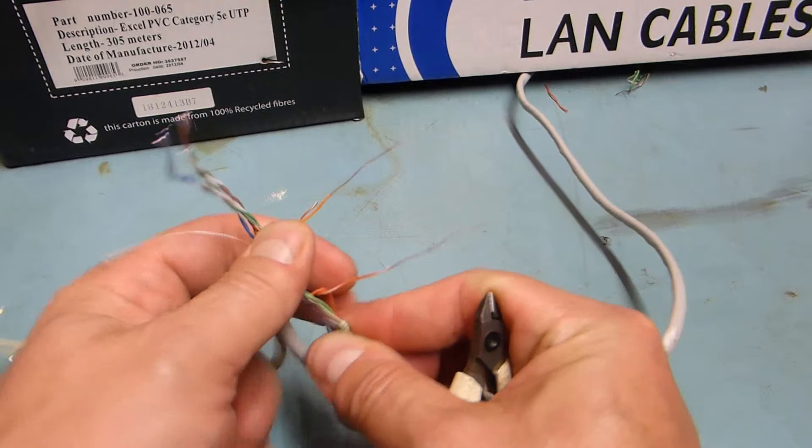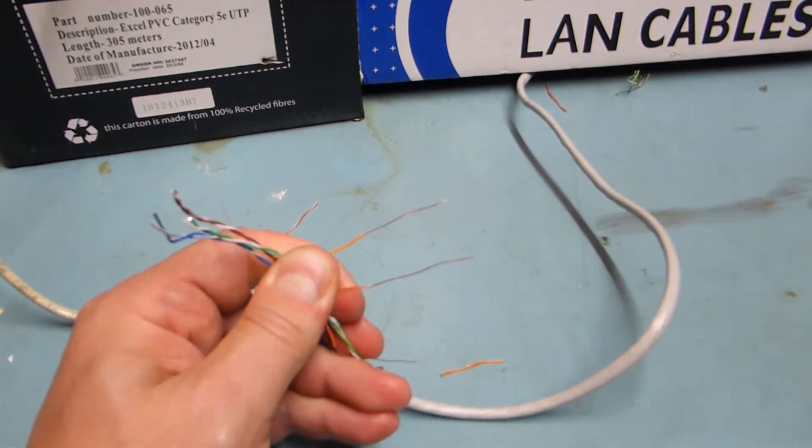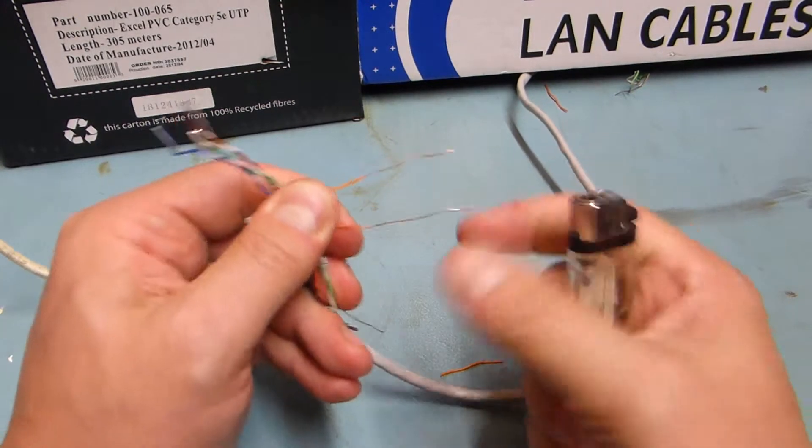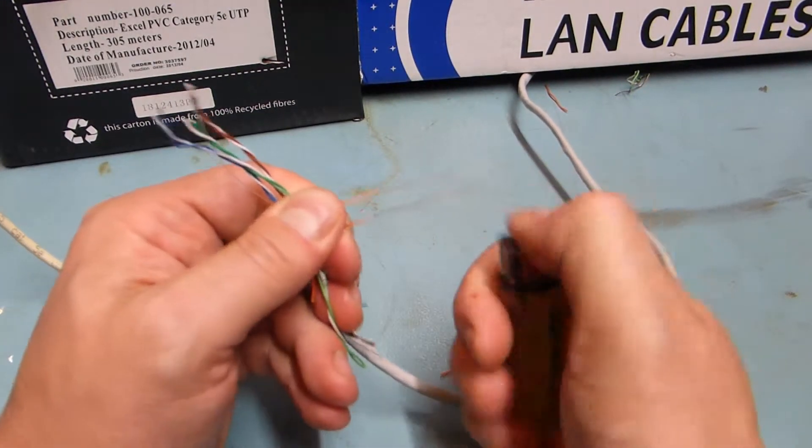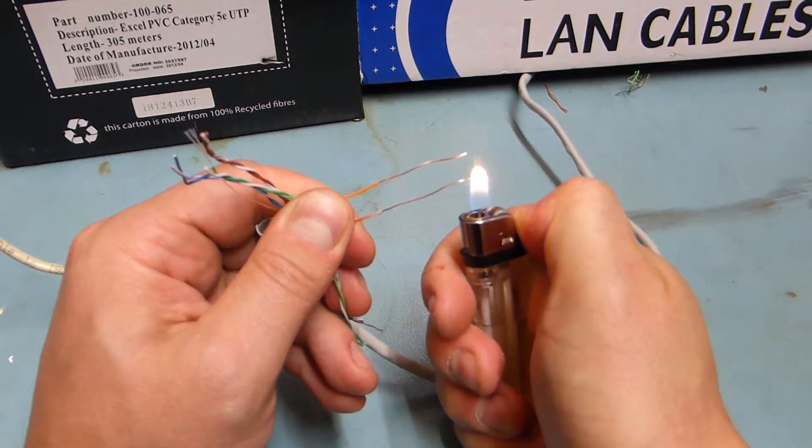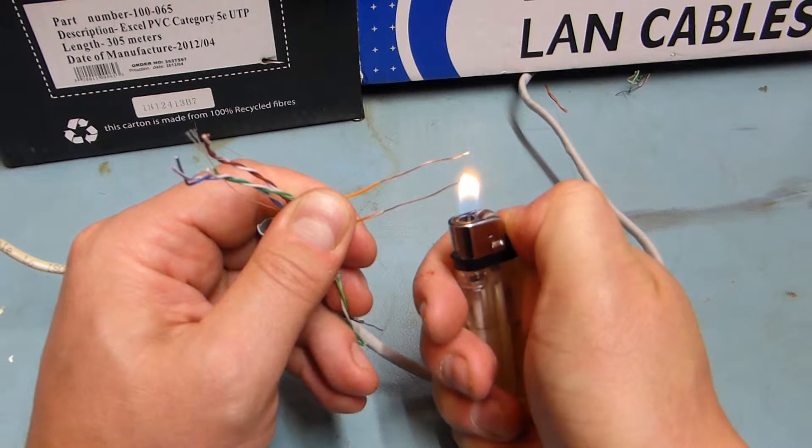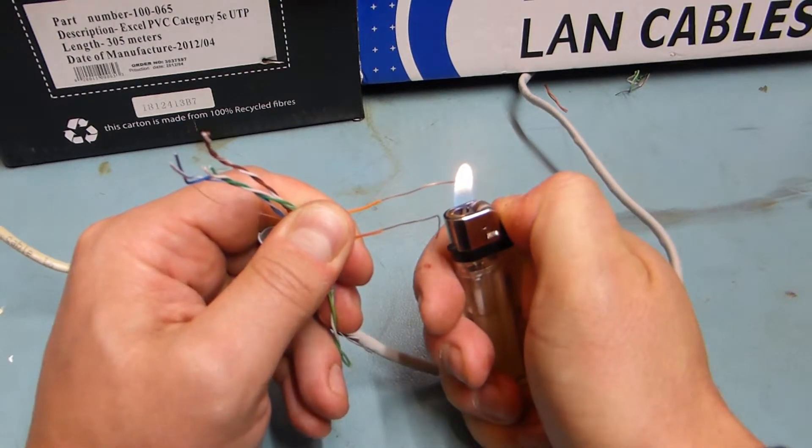is simply set fire to them or rather heat them up with a cigarette lighter. So that's the solid copper. This is the copper-coated aluminum. So if I heat it up you can see instantly it just melts away whereas on here